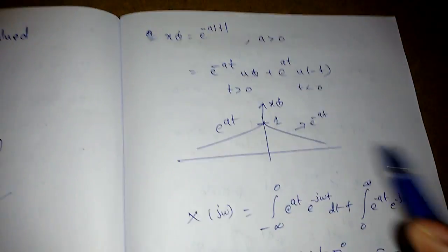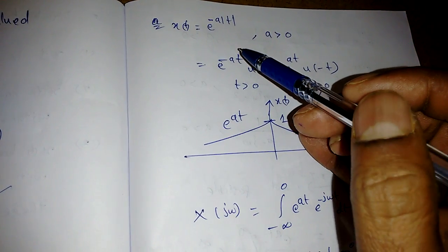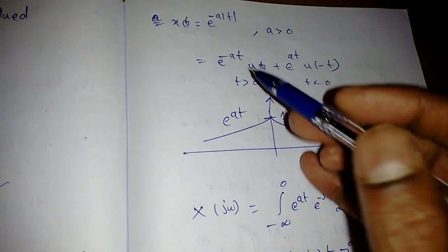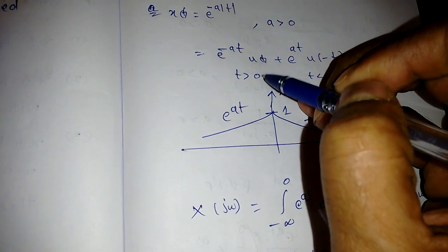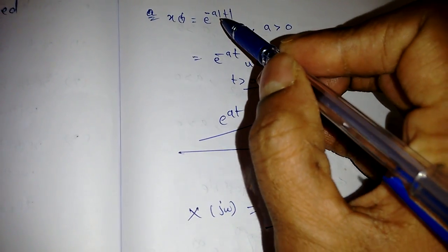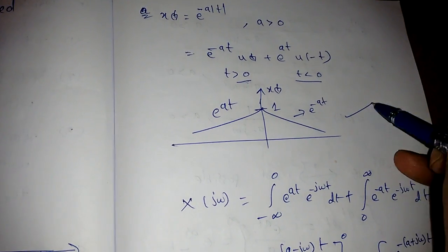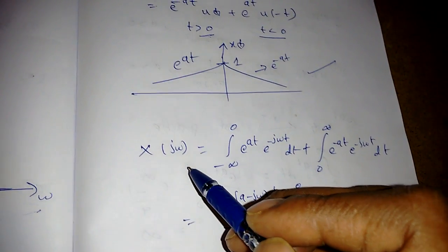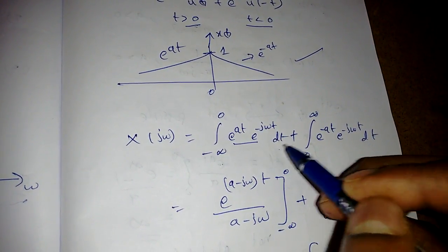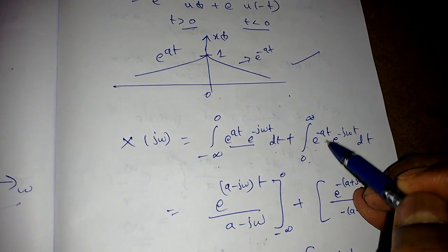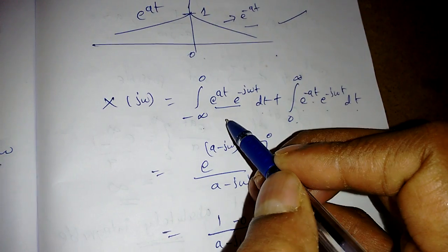Another important signal is e^(−a|t|). The absolute value means: for t > 0 it becomes e^(−at), and for t < 0 it becomes e^(at)·u(−t). To find the Fourier transform, we split the integral: from minus infinity to 0 of e^(at)·e^(−jωt) dt, plus from 0 to infinity of e^(−at)·e^(−jωt) dt.